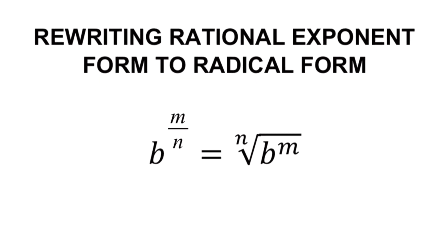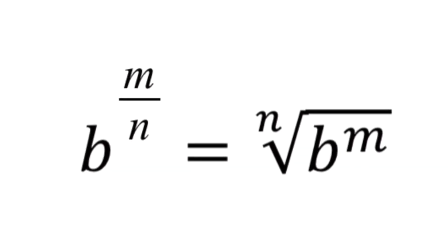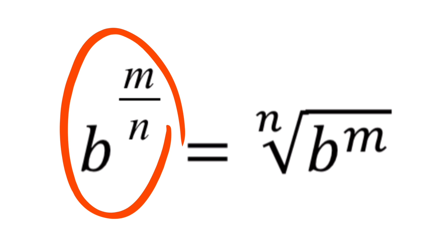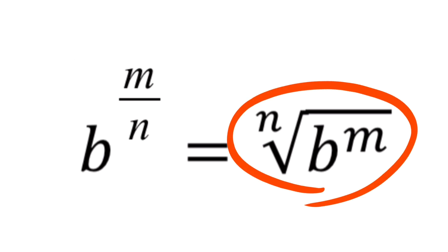Please remember that the notation you see right now is called the rational exponent or fractional exponent form, and this is read as b raised to the power m over n. Notice that the exponent is in fractional form — that's why this is called a rational exponent form or fractional exponent form. We can actually rewrite this rational exponent form to its equivalent radical form.